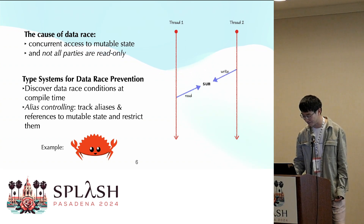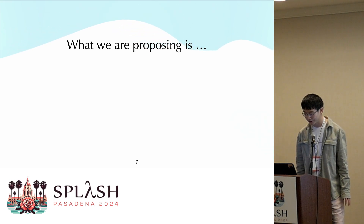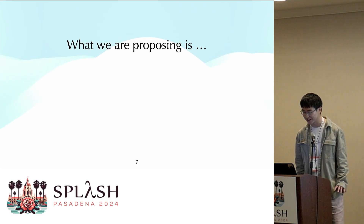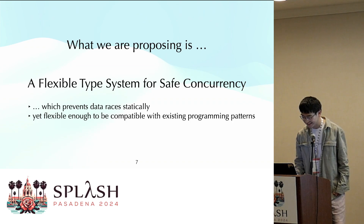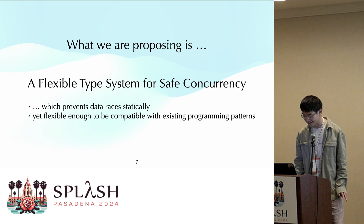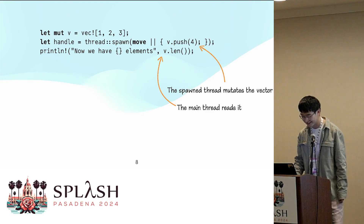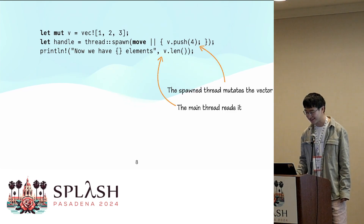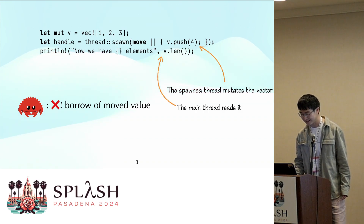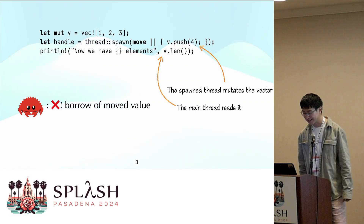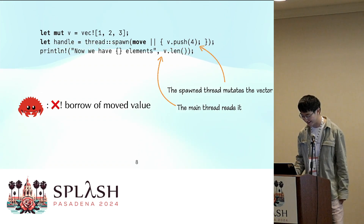A system like safe Rust will clash with existing programming patterns, making it quite difficult to migrate existing code or languages to such a system. What we are going to do is propose a type system for safe concurrency that is flexible enough to be compatible with established programming patterns that rely on aliases. In Rust, the main function spawns a thread that mutates a vector, and the main thread reads the length of the vector. Rust rejects it, complaining about a 'borrow of moved value,' because the thread in Rust requests ownership of the data it captures, effectively precluding all other aliases to that data.